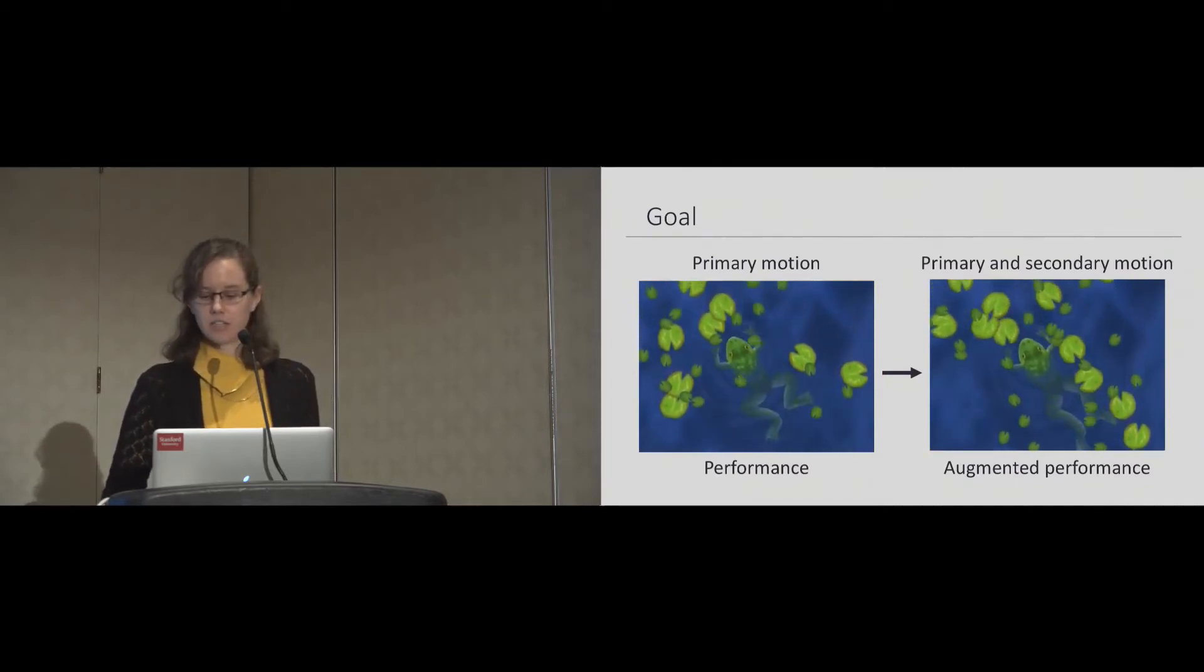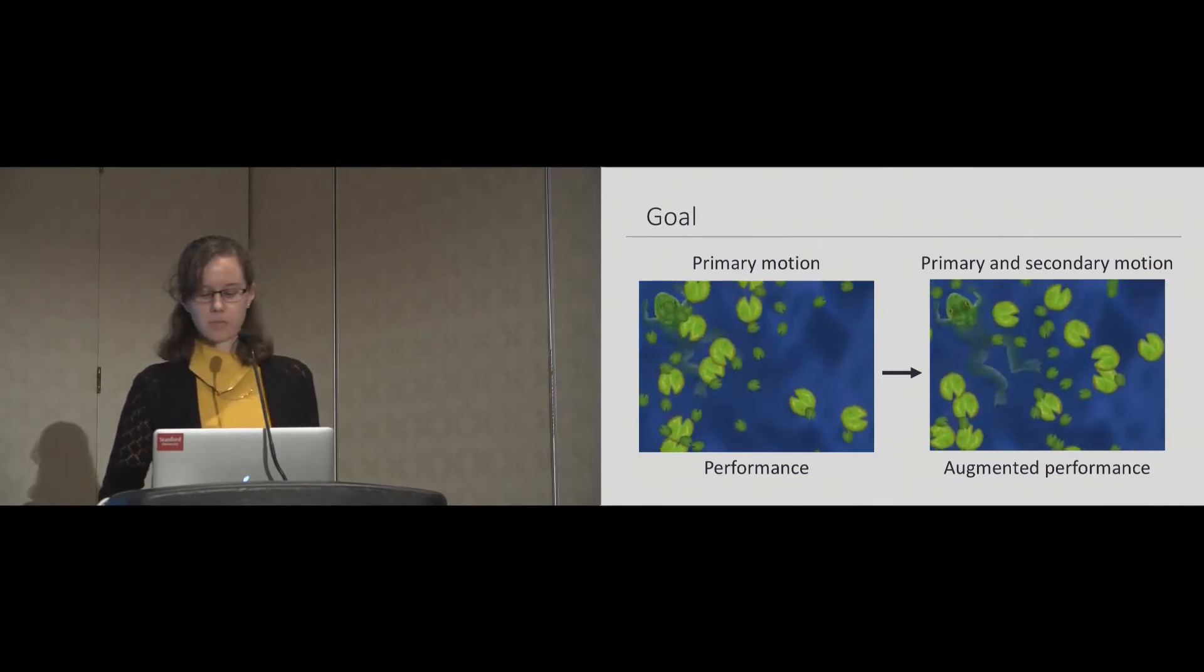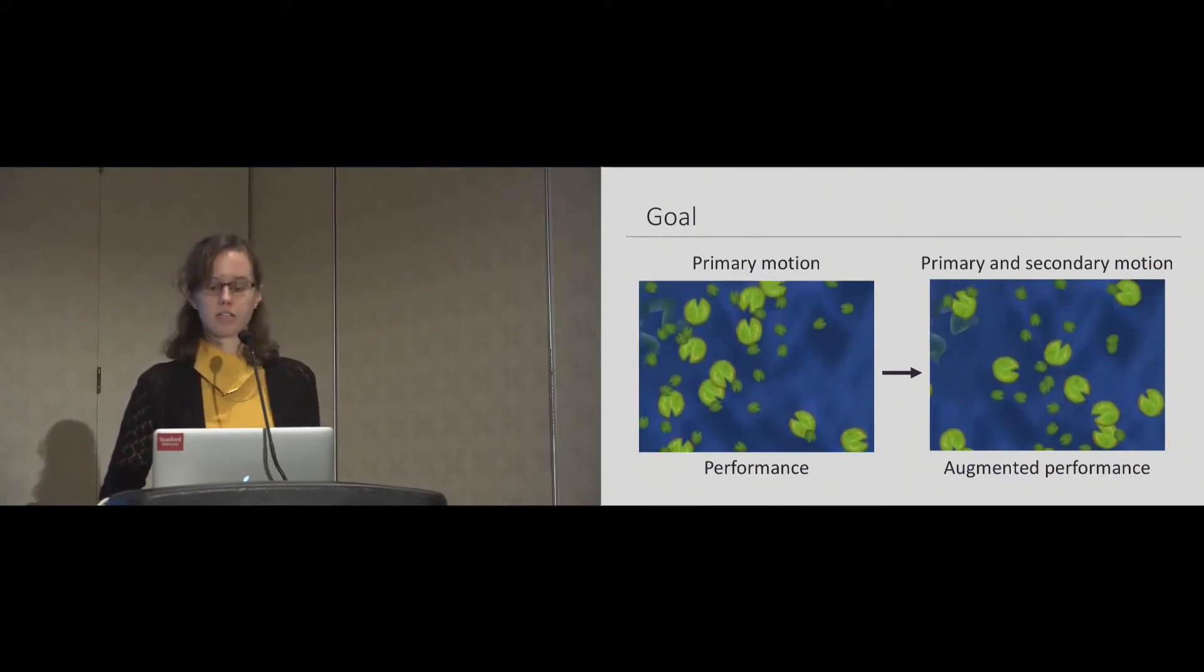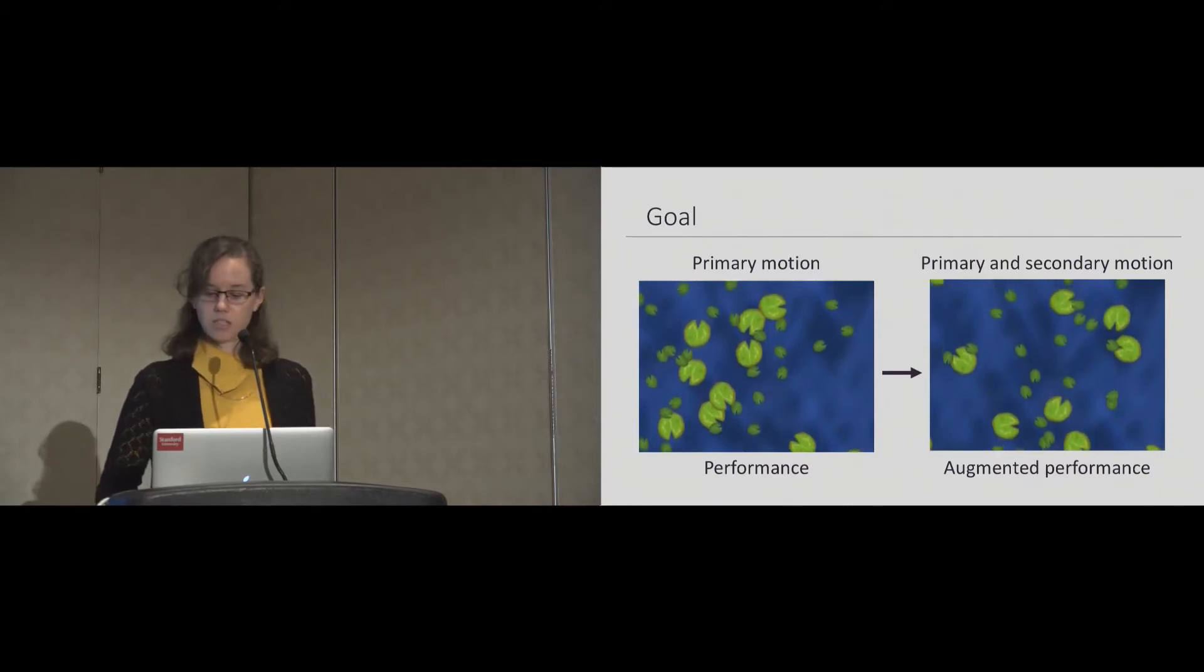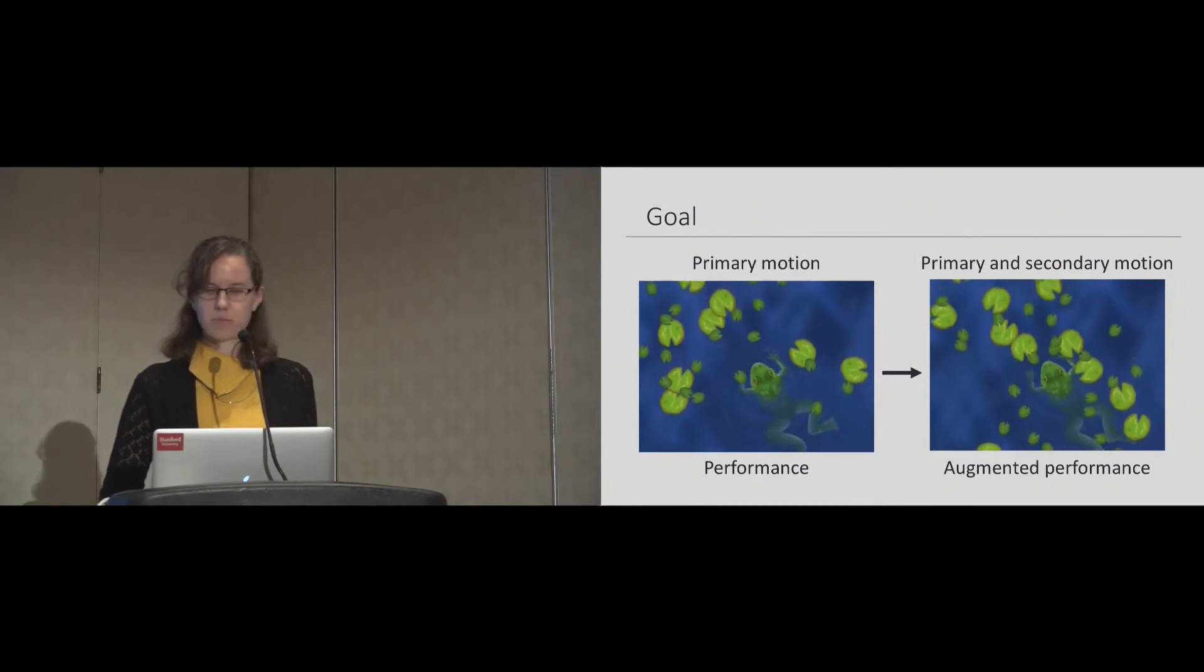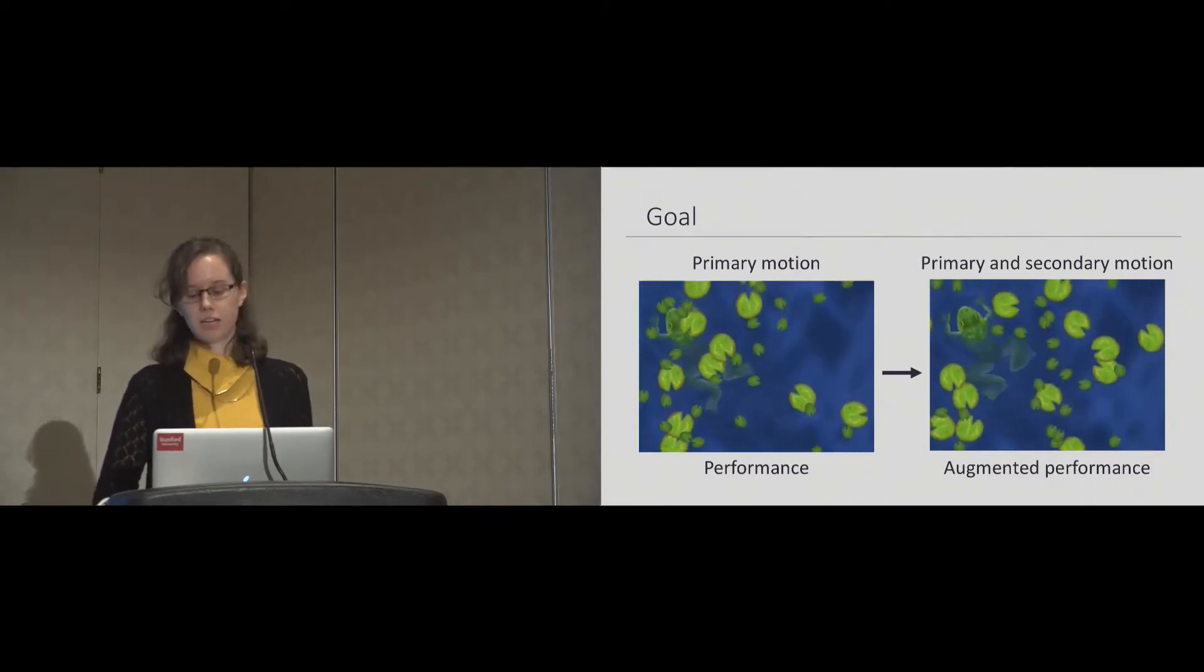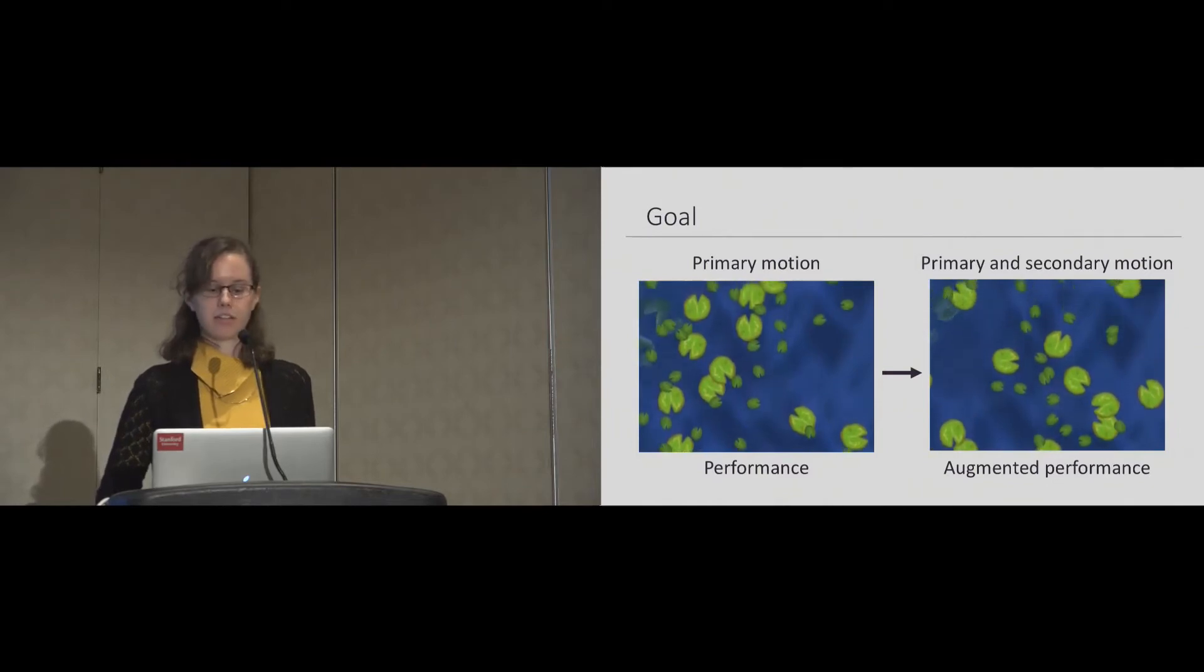Our goal is to make it easier for artists to add secondary animation to their illustrated characters. The input of our system is a performance of the primary motion of the character as shown on the left. In our result on the right, we add secondary animation. Our solution augments the layer-based representation of illustrative characters to enable the creation of automatic secondary animation.